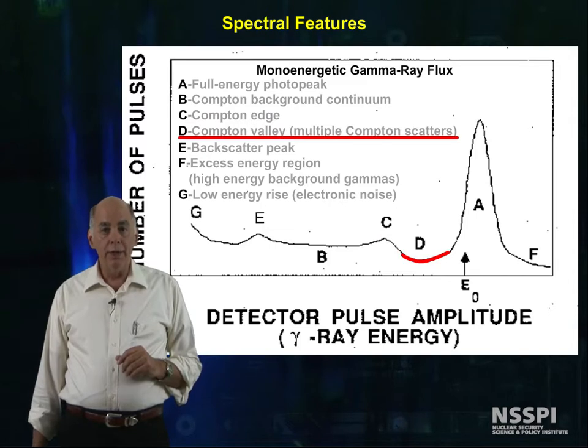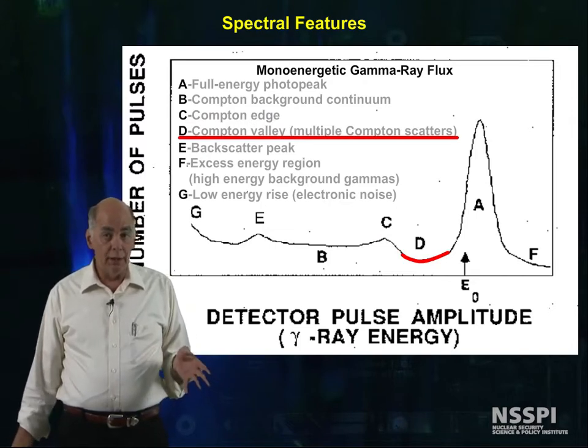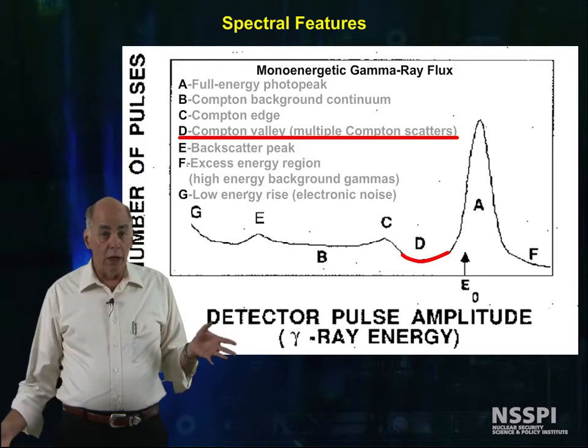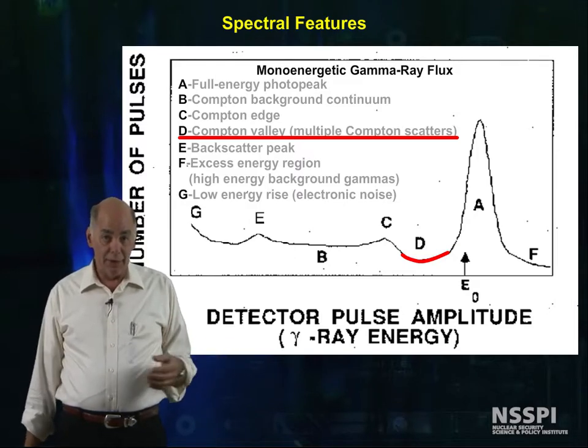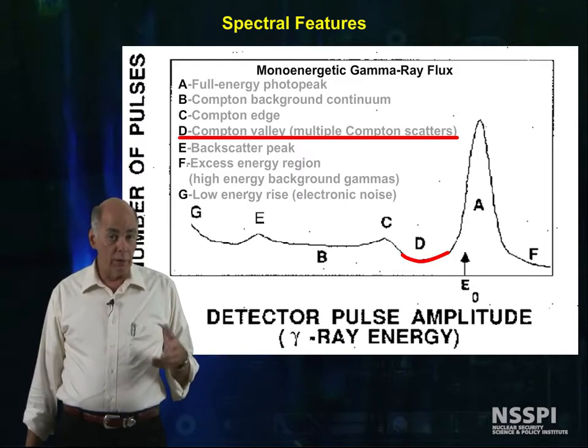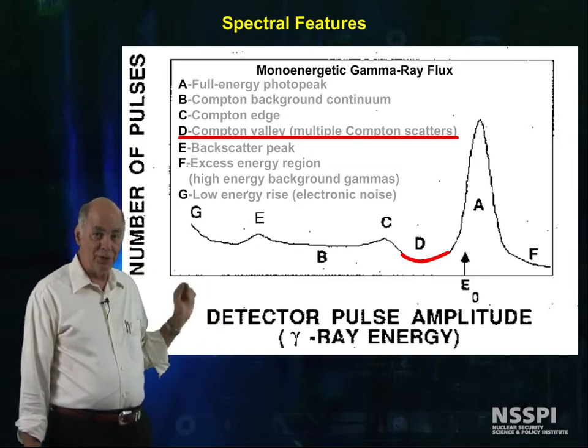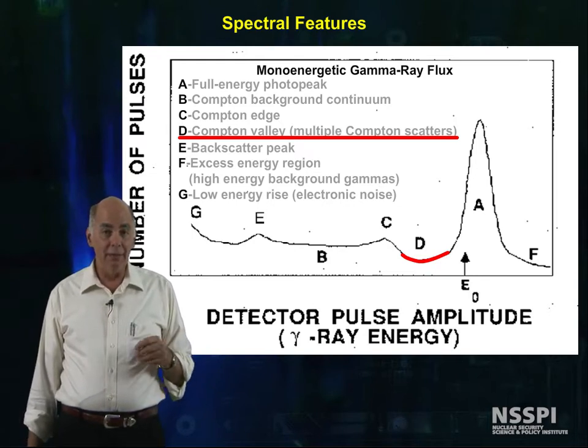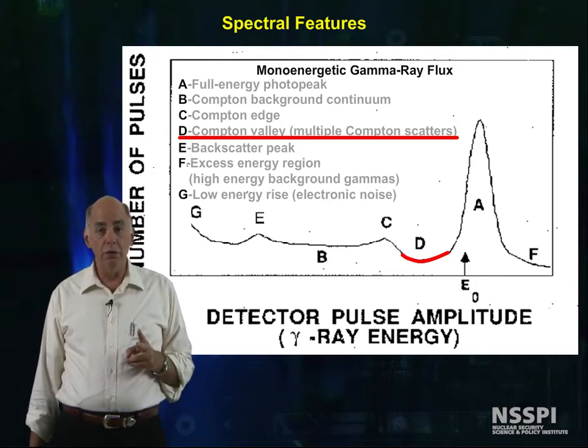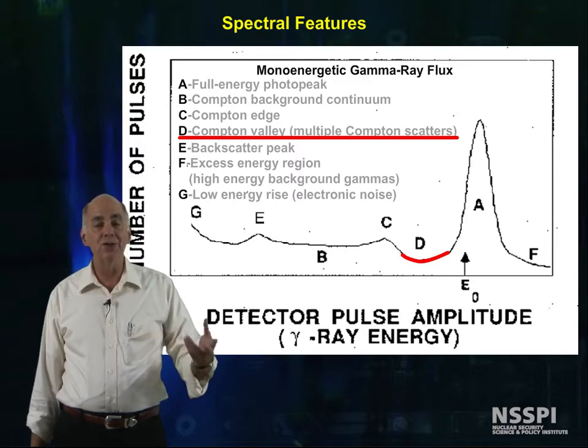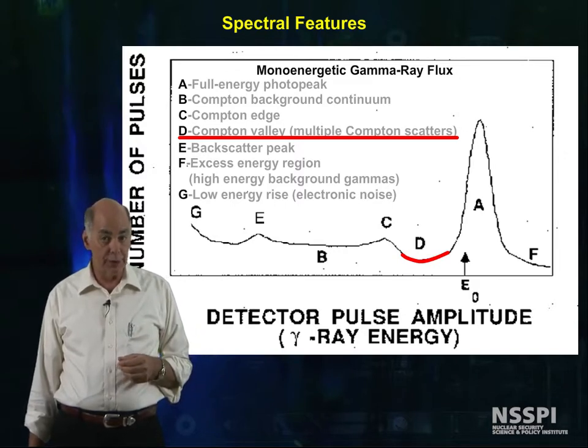We theoretically expect zero counts in region D, because Compton can't get that much energy into the detector, a photoelectric can't, and pair production can't get it there either. So what produces this much energy in the detector is a gamma that undergoes at least two Compton scatters, and then the last scattered photon escapes from the detector.